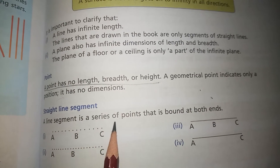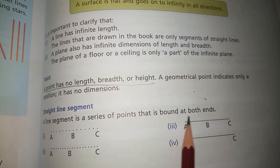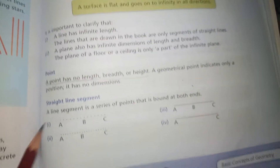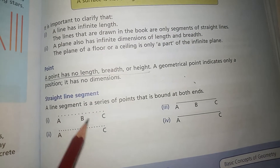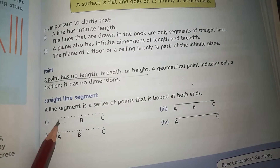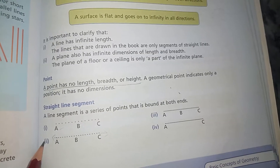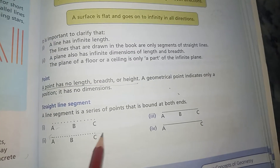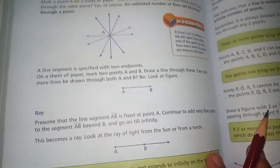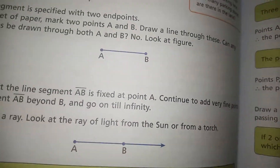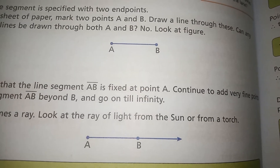A line segment is a series of points that is bound at both ends. You have to memorize these definitions. You can do Chapter 10 and the exercise.